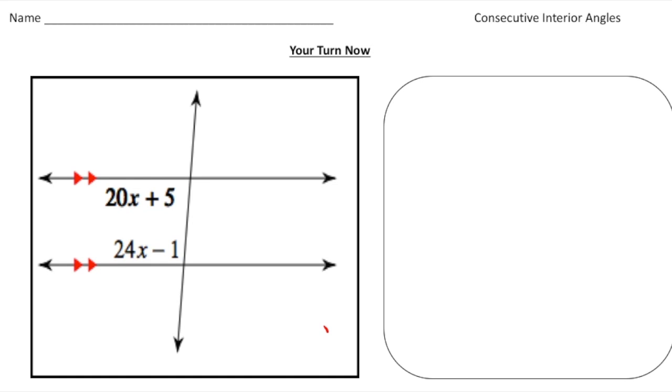Alright, welcome back. Let's see how you did with this practice problem. So here we have again two parallel lines and a transversal, and we want to find the value of x. So again, we know that this angle here as well as this angle here are same side interior, which means their sum is going to be 180 degrees. So I can write the equation: 20x plus 5 plus 24x minus 1 equals 180 degrees.